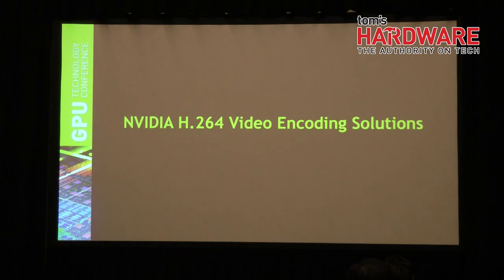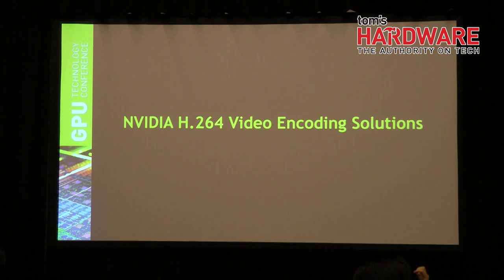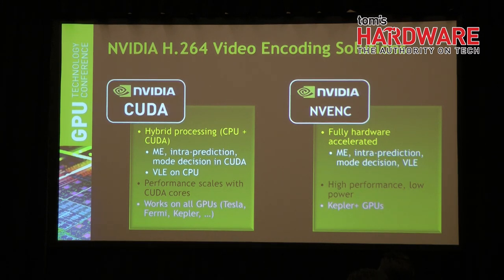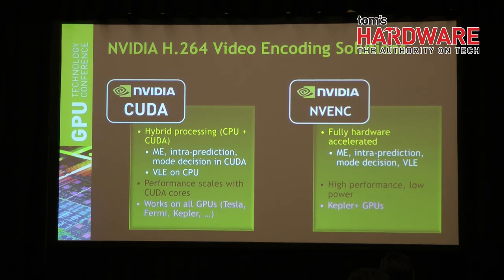What does NVIDIA provide in terms of video encoding solutions? All technologies are focused on H.264 — no other codecs are supported at this point. There are two parallel technologies: the old NVIDIA CUDA-based encoder, documented in the CUDA SDK, and the new hardware-based architecture called NVENC. NVENC is the fixed-function hardware that NVIDIA introduced as part of the Kepler architecture. Going forward, all new developments will be on NVENC.